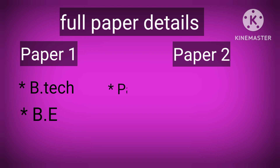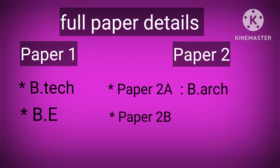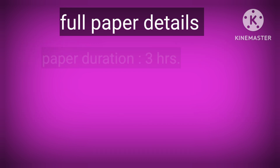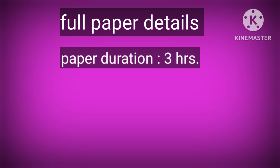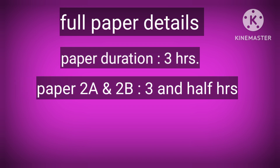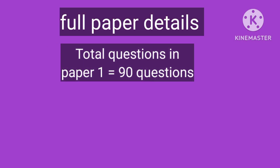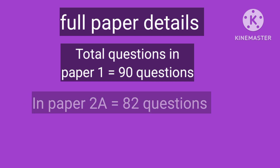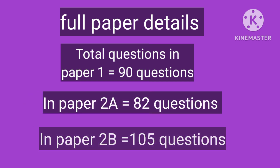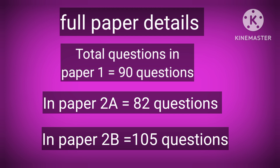Moving to the full paper details: Paper 2A is for Bachelor of Architecture and Paper 2B is for Bachelor of Planning. The duration for Paper 1 is 3 hours, and Papers 2A and 2B combined are 3 and a half hours. There will be 90 questions for Paper 1, and 105 questions for Papers 2A and 2B.